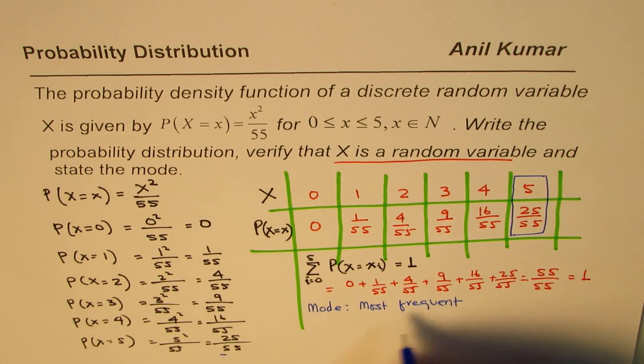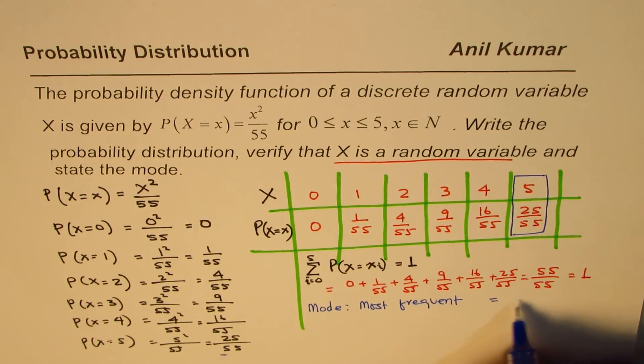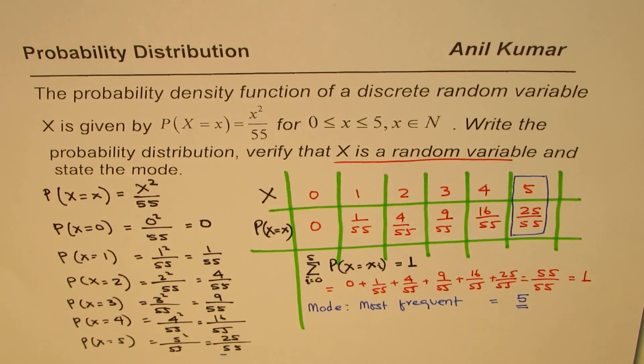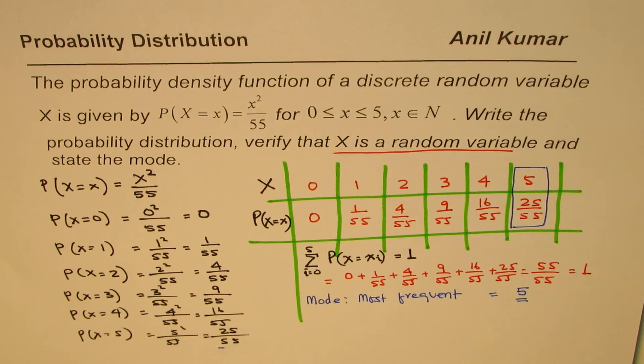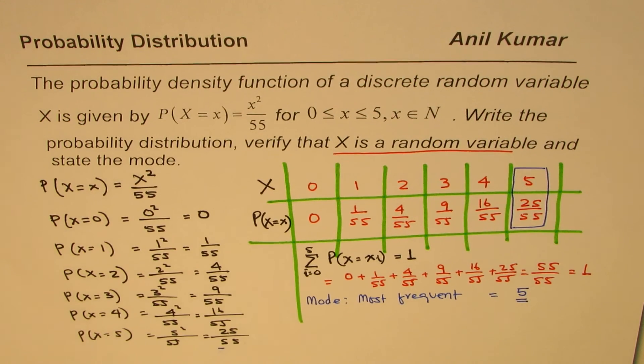So the mode in this case is equal to 5. The output for the random variable which corresponds to 5 is the mode in the current example. I'm Anil Kumar, and I hope this example helps you to understand a few concepts. Thank you, and all the best.